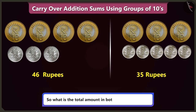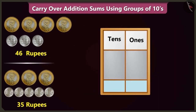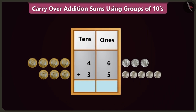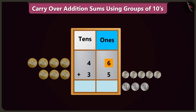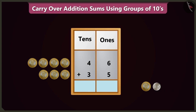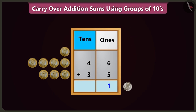So what is the total amount in both the piles of coins? To find that out, we have to write both the numbers in the ones and tens boxes. To add 5 to 6 in the ones box, count after 6 — that is 7, 8, 9, 10 — and we get 11. So 11 means one tens and one ones. We will write one ones in the ones box and carry over one tens.